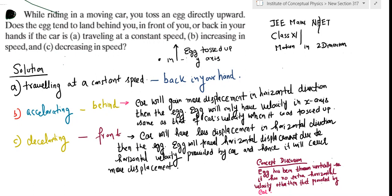There are three parts to the question. The car can have three situations: either the car is traveling at a constant speed, it has increased in speed which is acceleration, or if the speed decreases which means deceleration.